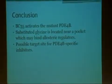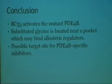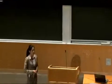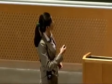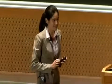In conclusion, we previously identified through the experimental step a compound, BC35, that instead of inhibiting the phosphodiesterase actually activates it. We also did analysis on the substituted glycine and found it located near a pocket which we believe could be an allosteric regulatory site, based on the evidence shown. This is great because we may have found a possible target site for PDE4B-specific inhibitors, meaning we may have taken the first step towards creating a drug that could treat COPD, asthma, or arthritis without causing people to vomit.